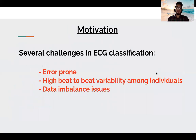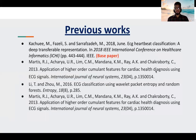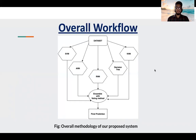There are some challenges in ECG classification: they are error-prone, they have high beat-to-beat variability among individuals, and they suffer from high data imbalance issues. These are the previous works done in this field and the red-marked paper is our base paper. This is the overall workflow of our proposed system and we are going to discuss this workflow in the next slides.